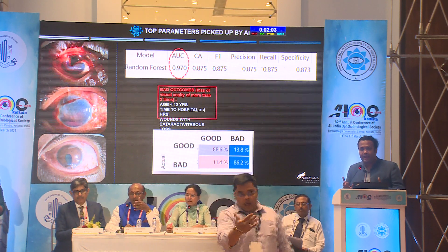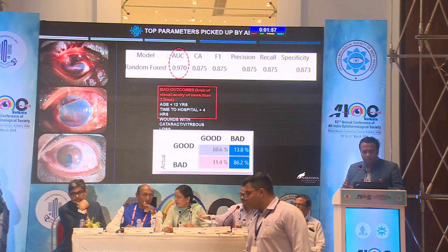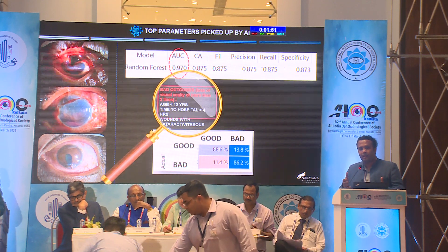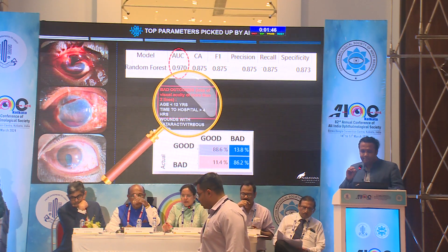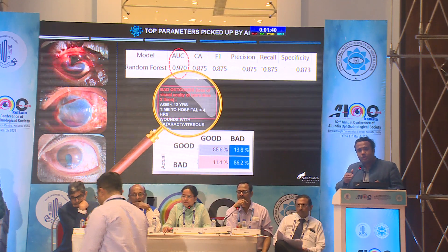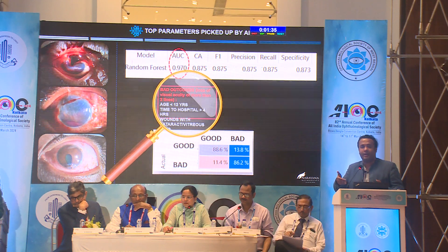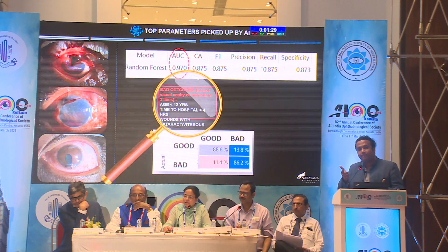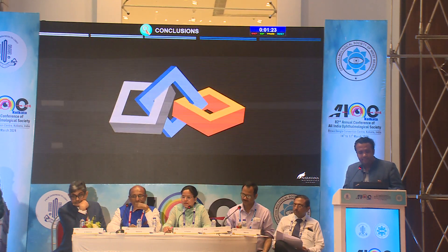The AI model was quite accurate. Parameters used include the area under the curve and the confusion matrix. Interestingly, in terms of the factors the AI picked up — we would normally expect cataract and posterior segment involvement, no doubt — but time to the hospital with a cut-off of four hours was surprisingly identified by the AI. This correlated well with place of residence outside the city where my hospital is located, and also correlated with income level. Multiple referrals increasing the time to hospital played an important role, and that was the second most important factor detected by the AI.